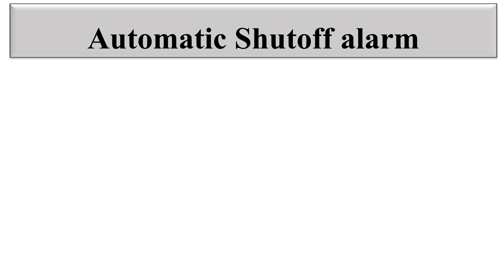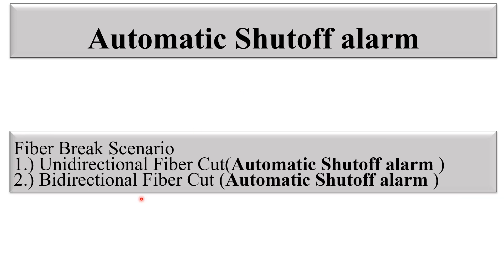Hello friends, in today's video we will discuss automatic set-off alarm. This automatic set-off alarm appears on CNA devices and amplifiers. We will discuss in detail what the automatic set-off alarm is, on which device it comes, and on which port it appears. We will discuss it in both scenarios: unidirectional fiber cut and bidirectional fiber cut.